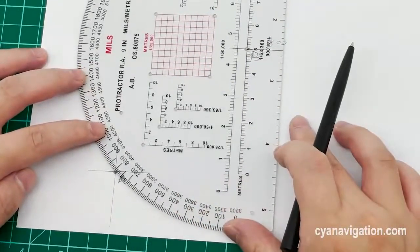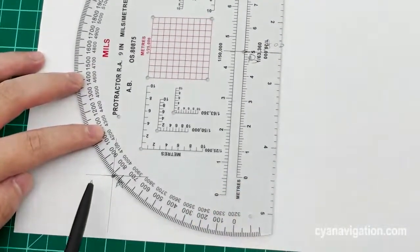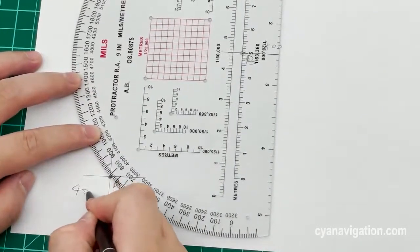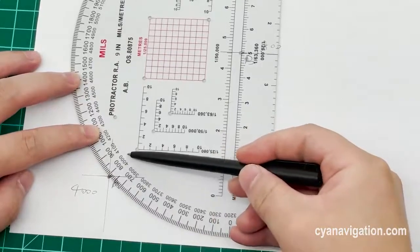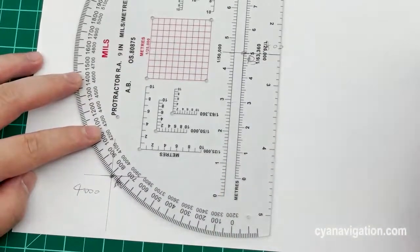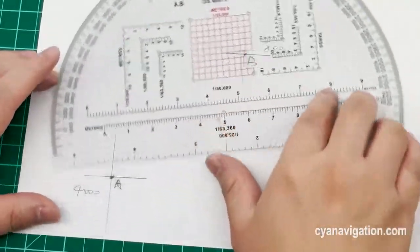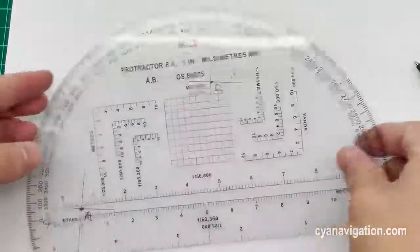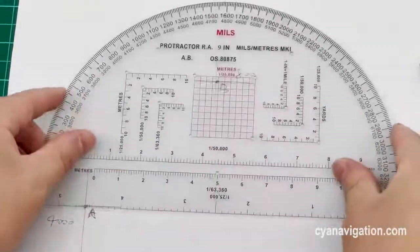Reading the inner scales, it's 4000. This is the answer. It's very convenient and easy to use this protractor. Hope you like it, thank you.